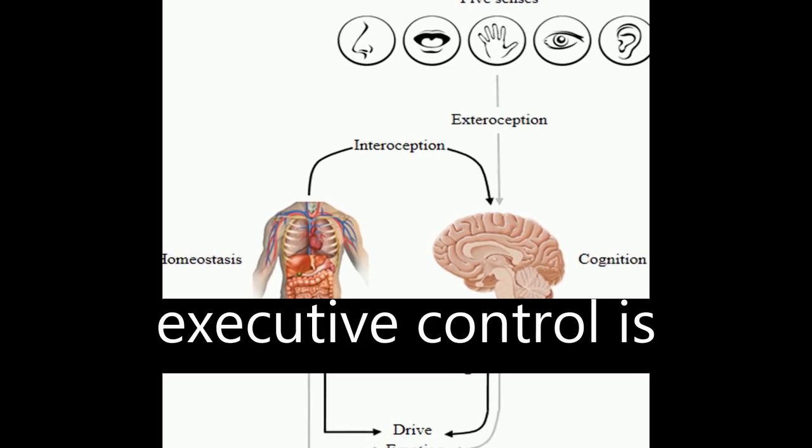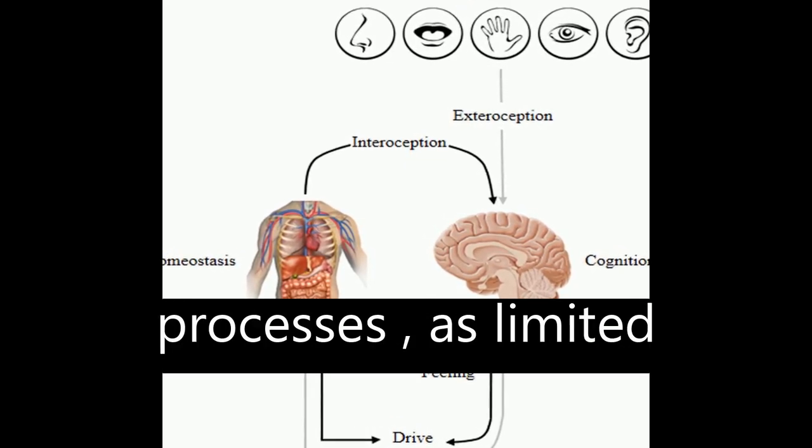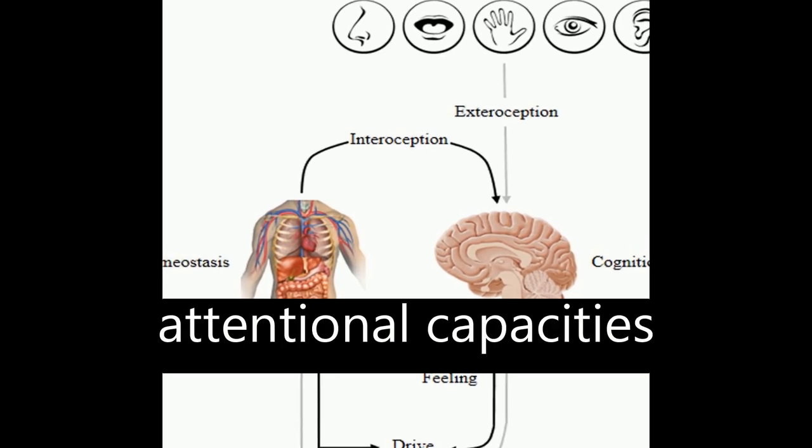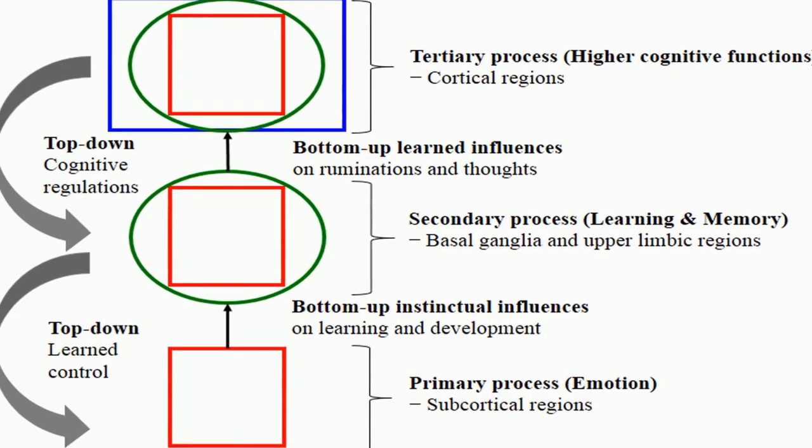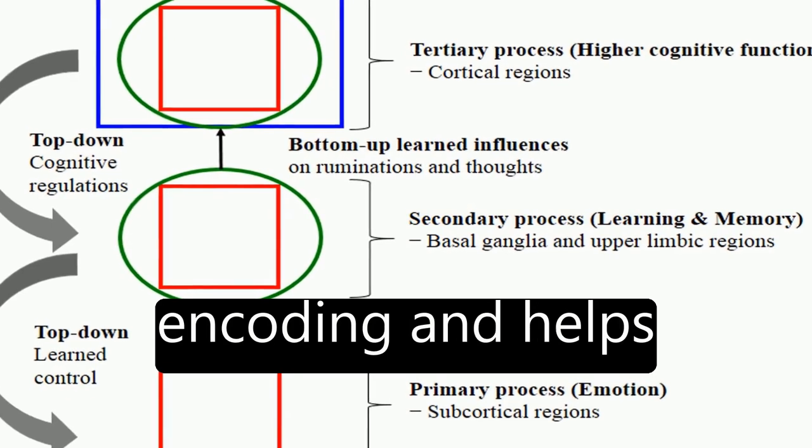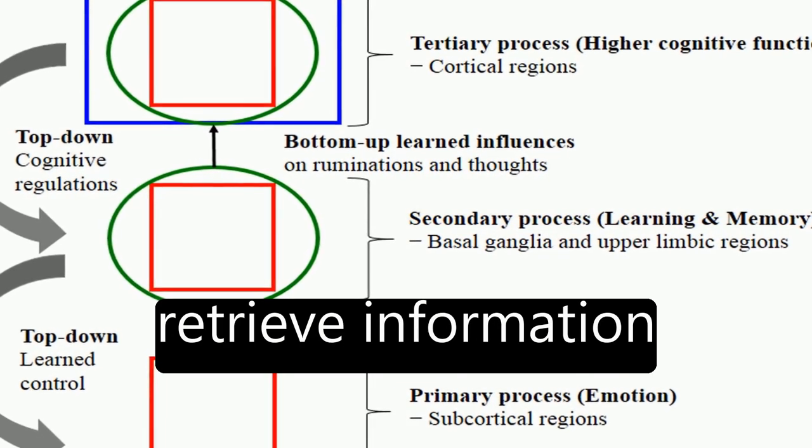This attentional and executive control is linked to learning processes, as limited attentional capacities are better focused on relevant information. Emotion facilitates encoding and helps retrieve information efficiently.